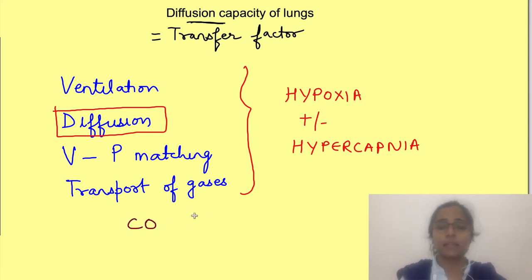This is done by determining carbon monoxide diffusing capacity. We have detailed the rate of diffusion of gases across respiratory membrane in another video, the link for which is given in the description section below.